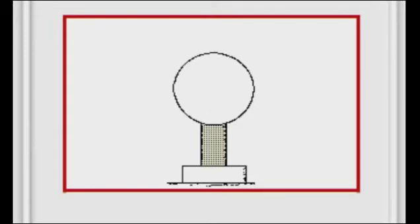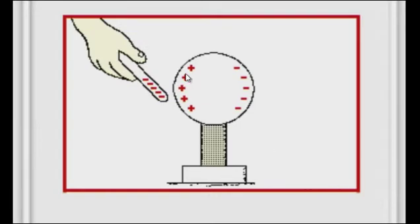So the first thing we have to do is bring a negative rod. This is a negative rod. Once we bring it close to this object, we notice that the charge in this object gets separated.